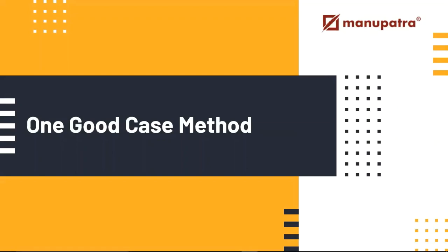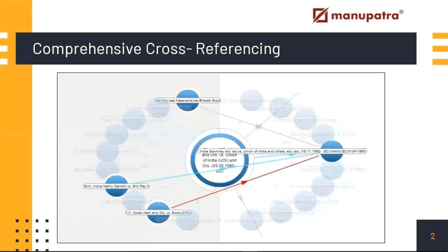Just by using that one case you will be able to find multiple cases that are very useful to you. Manupatra is uniquely capable for this kind of method because our database is comprehensively cross-referenced. That means if one judgment was referred in another judgment, we also capture the treatment given — whether it was just mentioned, referred, affirmed, or relied on. This is true for more than 20 lakh judgments on the website, making Manupatra a very comprehensive tool to find cases relevant for you.